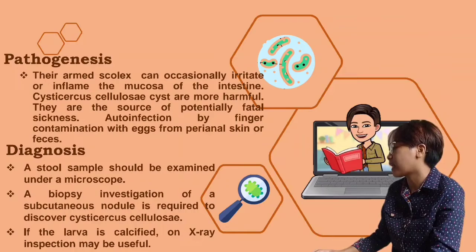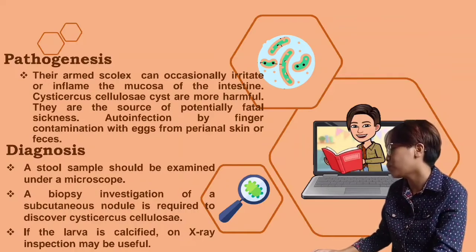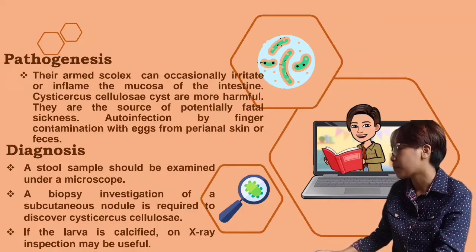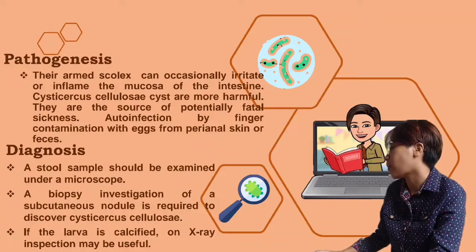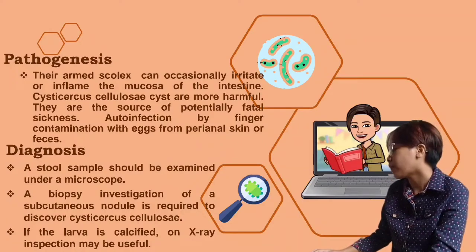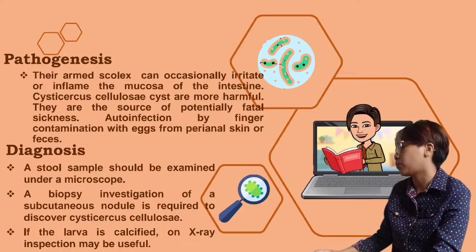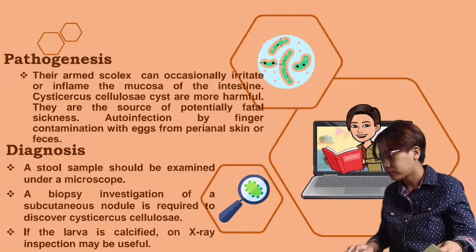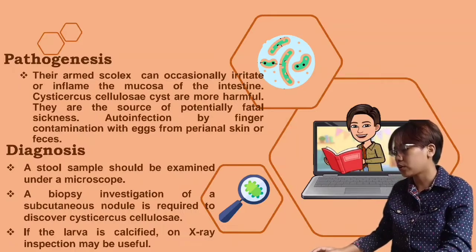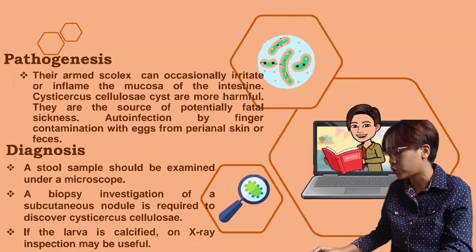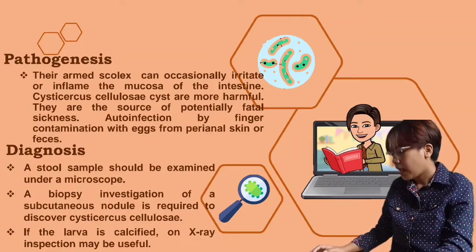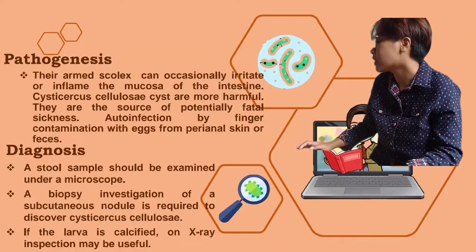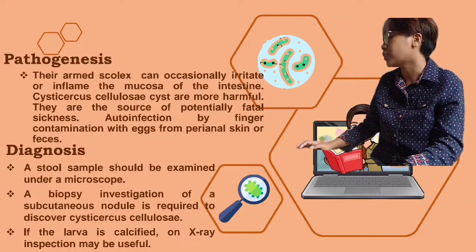For the pathogenesis, adult worms can occasionally irritate or inflame the mucosa of the intestine. Cysticercus cellulosae are more harmful and are the source of potentially fatal sickness. Auto-infection may occur by finger contamination with eggs, perianal skin, or feces. For the diagnosis, to detect eggs and proglottids, a stool sample should be examined under the microscope. A biopsy investigation of a subcutaneous nodule is required to discover cysticercus cellulosae.